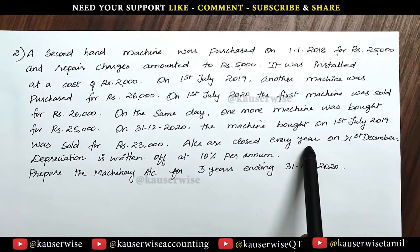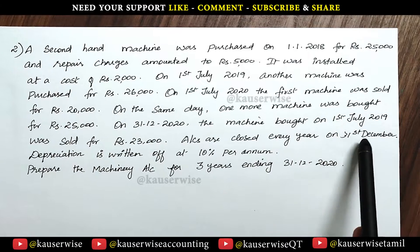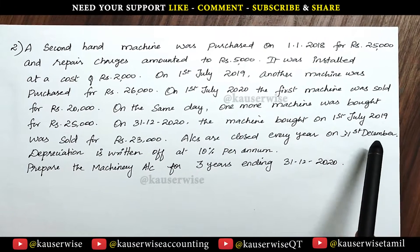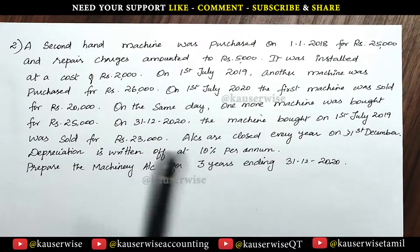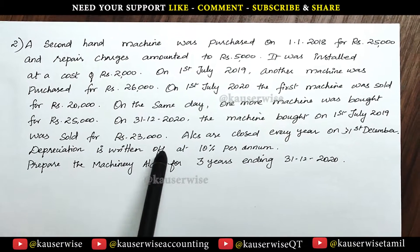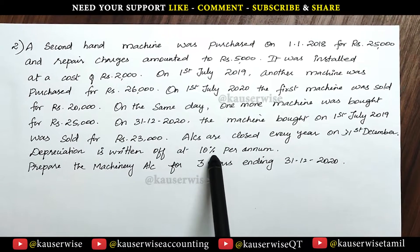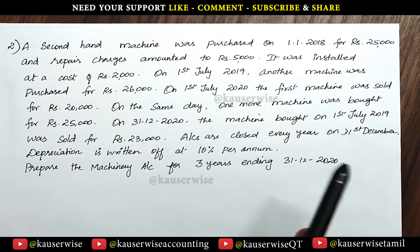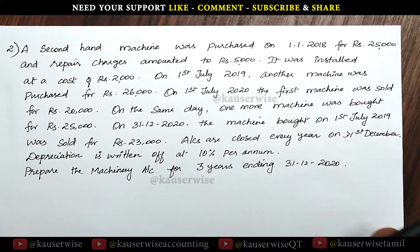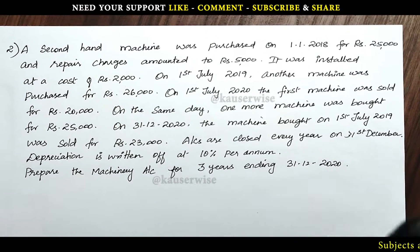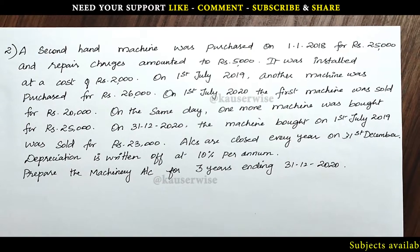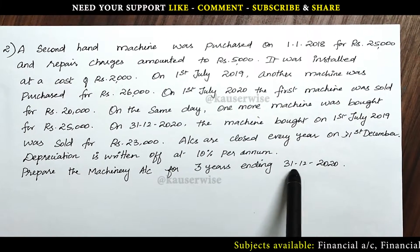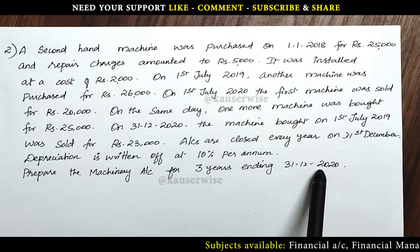Accounts are closed every year on 31st December, so every year on 31st December we have to calculate depreciation. The depreciation is written off at 10% per annum. Here the method of depreciation is not mentioned; in that case you can apply the straight line method. Prepare the machinery account for 3 years ending 31st December 2020.